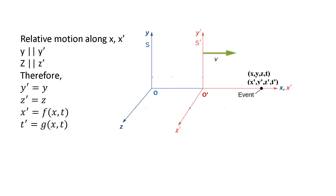Since motion is only along X, we have Y prime equals Y and Z prime equals Z. X prime depends only on X and T. Similarly, T prime also depends only on X and T.